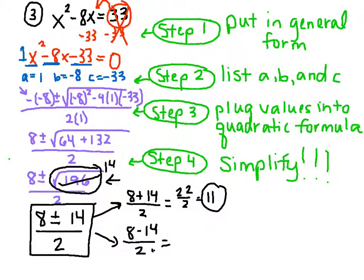And 8 minus 14 is a negative 6 divided by 2, and that's negative 3. So that's another one of our zeros. So our zeros are 11 and negative 3.